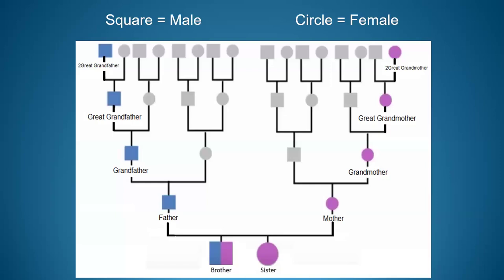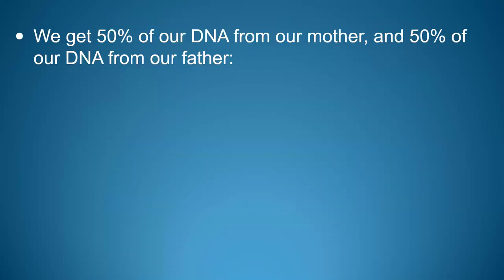We'll come back to a family chart a few times throughout the presentation. When we do, I'd like you to imagine you are one of the people at the bottom — if you are male, imagine you are the square at the bottom left labeled 'brother'; if female, imagine you are the circle labeled 'sister.' We've all inherited 50% of our DNA from our biological mother and 50% from our biological father.